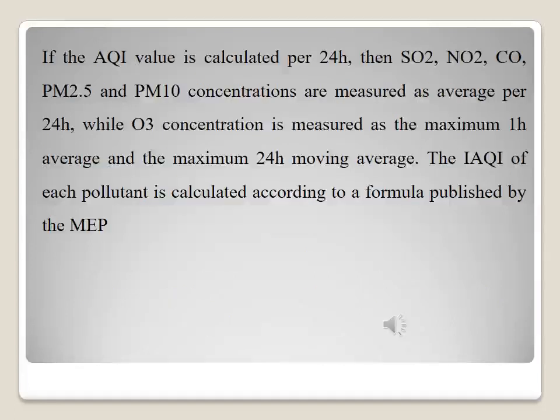If the AQI value is calculated per 24 hours, then sulfur dioxide, nitrogen dioxide, carbon monoxide, particulate matter 2.5, and particulate matter 10 concentrations are measured as averages per 24 hours, while ozone concentration is measured as the maximum one-hour average and the maximum 24-hour moving average.